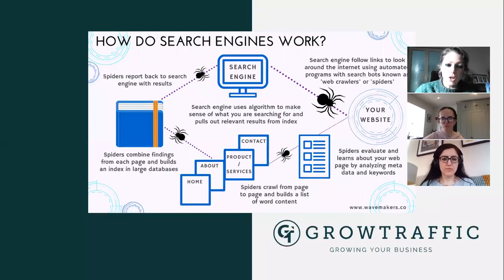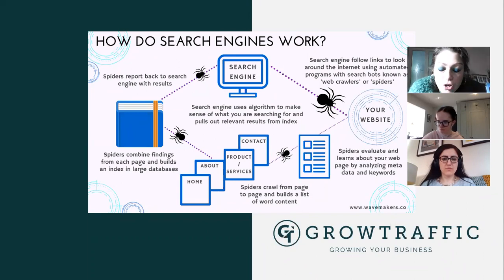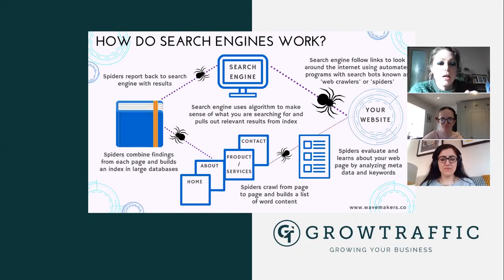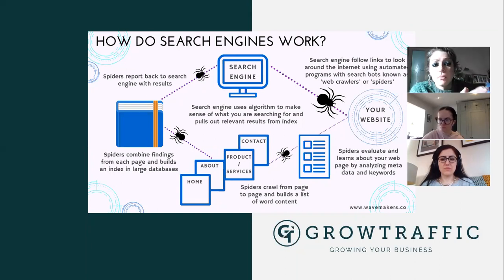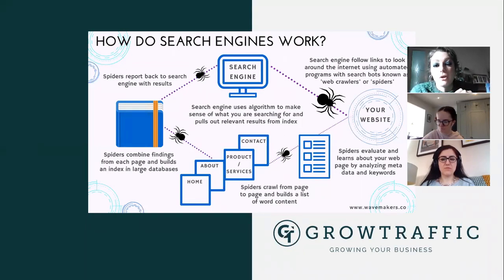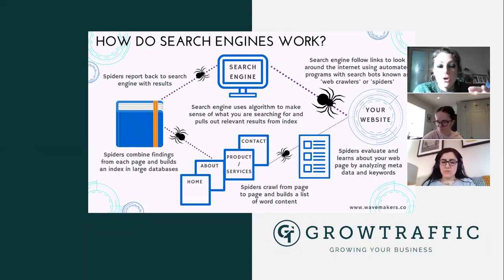So first of all, what is a search engine algorithm? It's a phenomenally complex and also a phenomenally simple thing. There are hundreds of thousands of factors that go into how a search engine works and how it chooses which website is best, but at its heart it has only very simple ways of understanding what we're doing. Throughout this I'll talk about Google purely because they've got the biggest market share, but when I say search engine algorithms I also mean Bing, Yahoo, and DuckDuckGo.